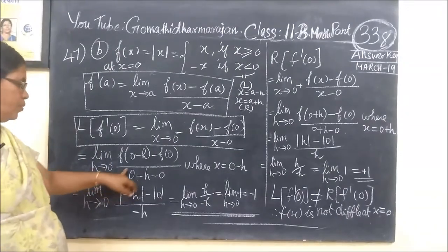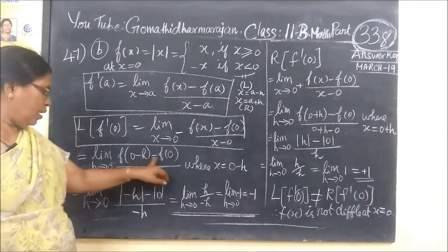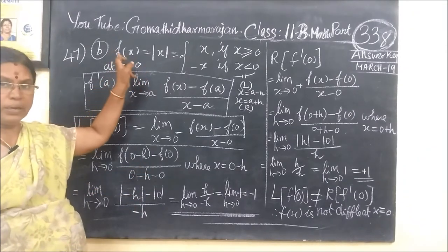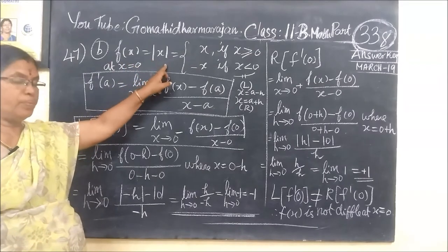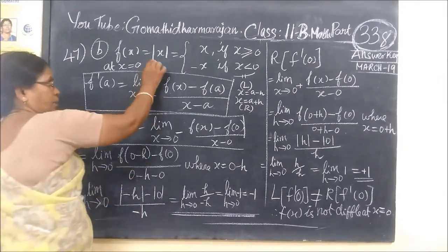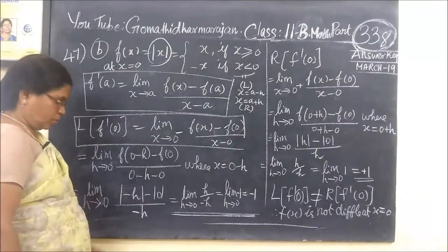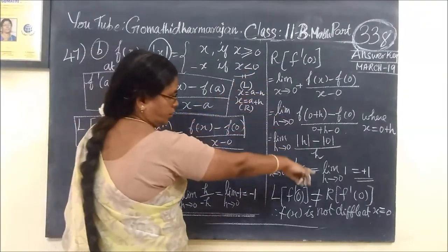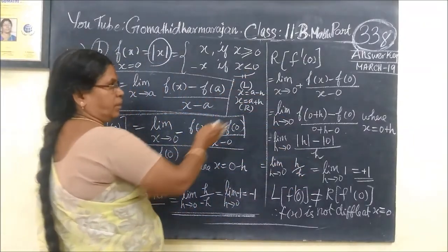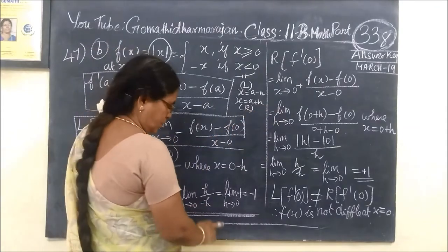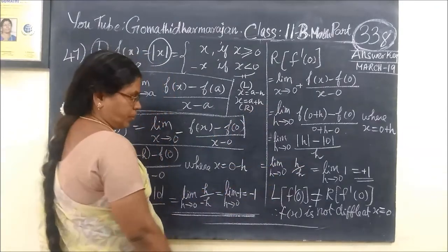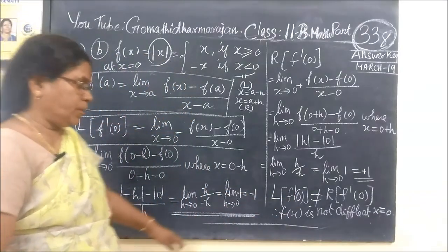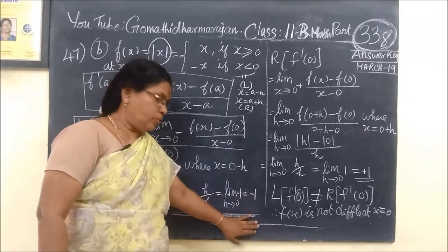Now, thinking about the left hand side: this will be 0 minus h and the right hand side will be 0 plus h. We can apply the limit now. The left hand side gives minus 1 and the right hand side gives plus 1. This left hand side and this right hand side are not equal. Therefore, this is not differentiable at x equal to 0.